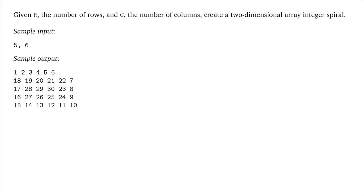We have this problem where given r the number of rows and c the number of columns, we want to create a two-dimensional array integer spiral. Looking at the sample input and output, we have input 5 comma 6 which is r and c, and our sample output has 5 rows and for each row we have 6 columns.